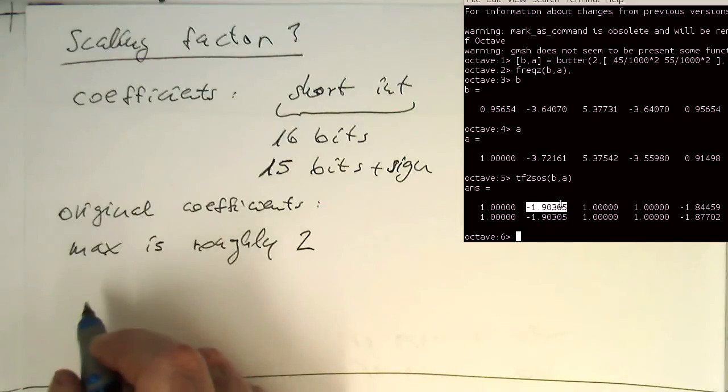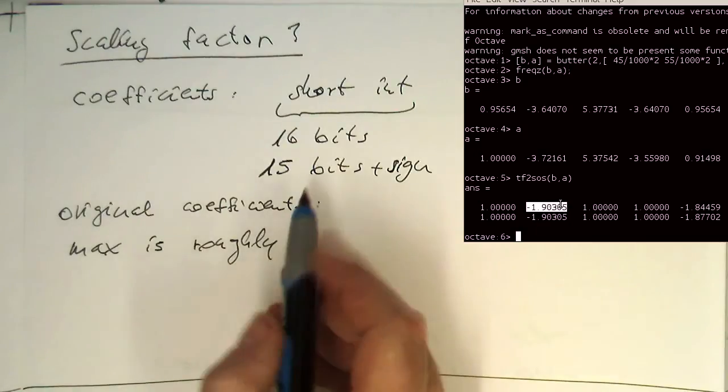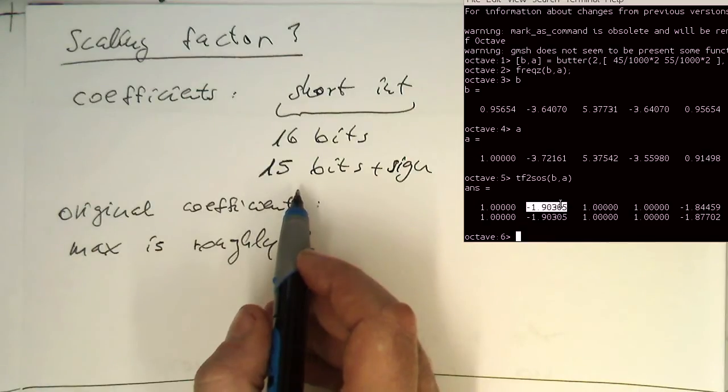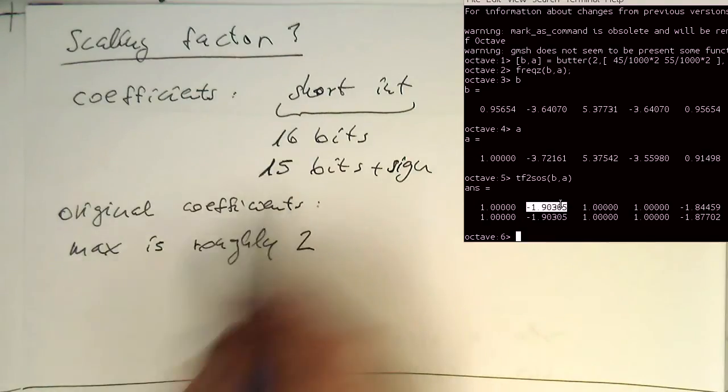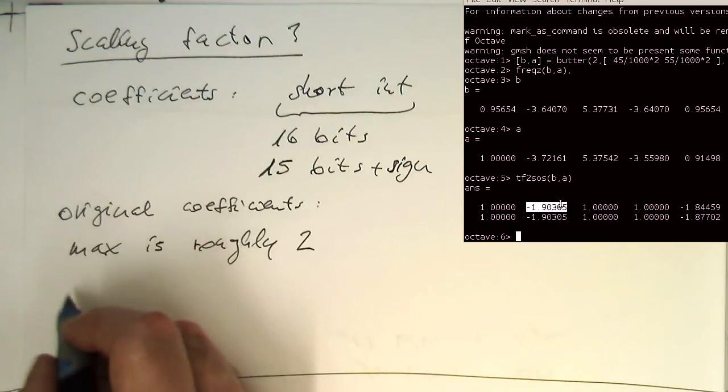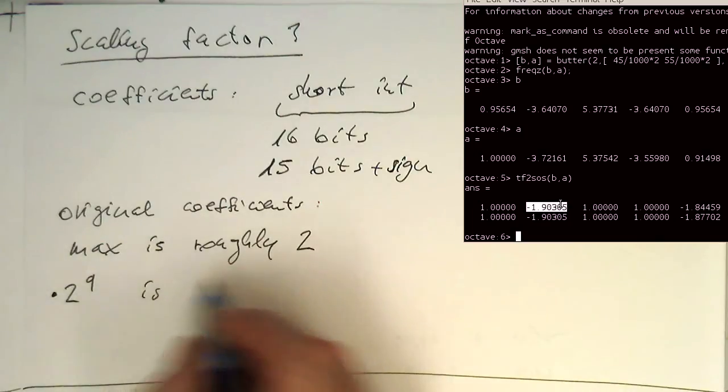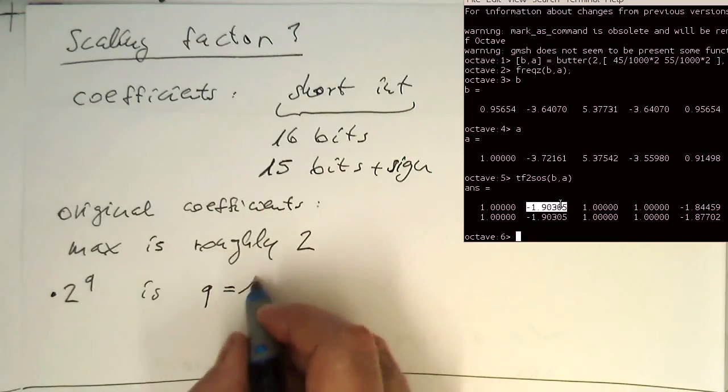So this means if we want to stay within these 15 bits here, then the maximum Q, or the maximum multiplication factor for this 2 times Q, is Q equals 14. That's our highest factor.